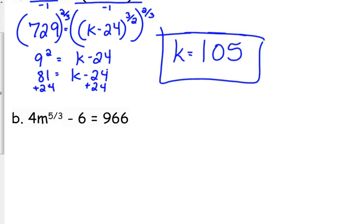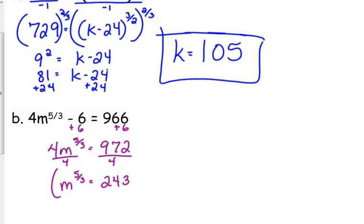4m to the 5 over 3 minus 6 equals 966. The exponent is just on that single variable, so that's the only thing we need to isolate. We start by adding the 6, then divide by 4. That is 243.